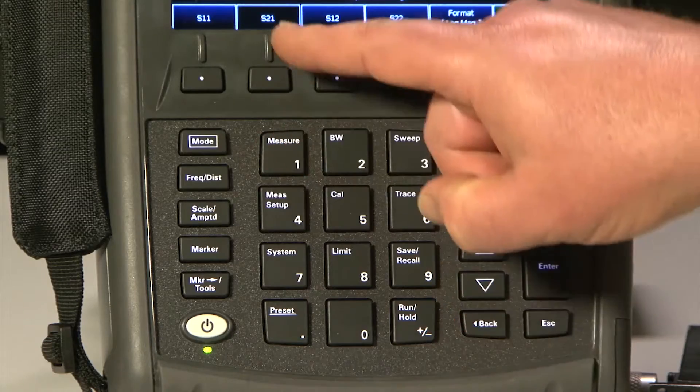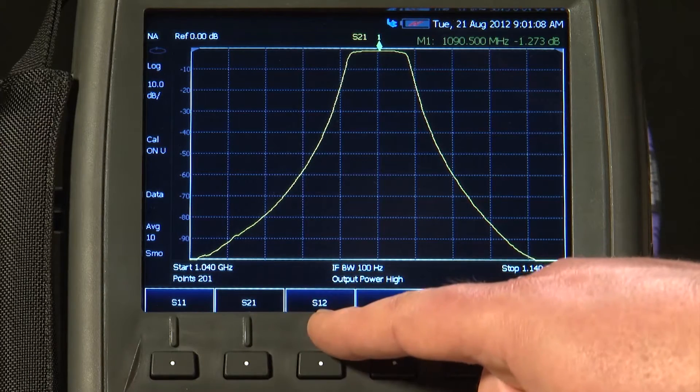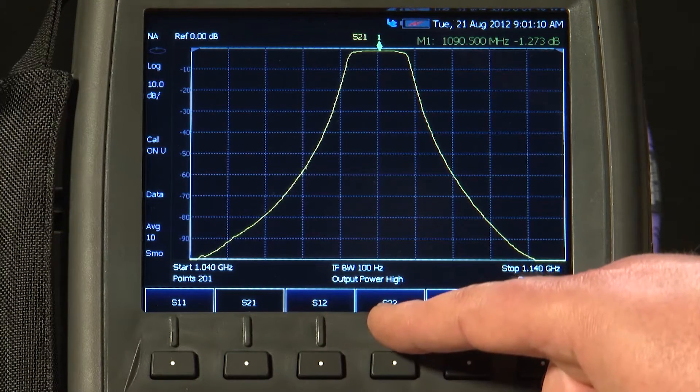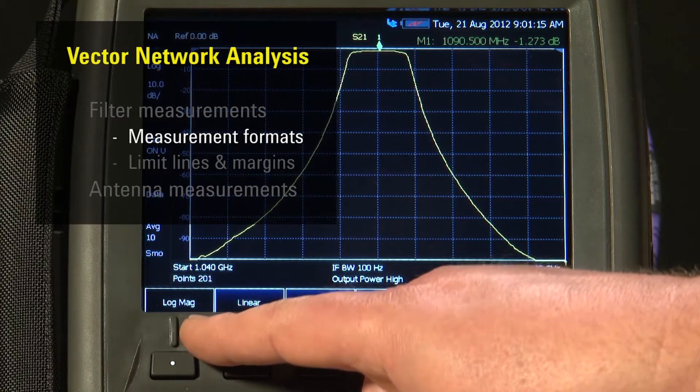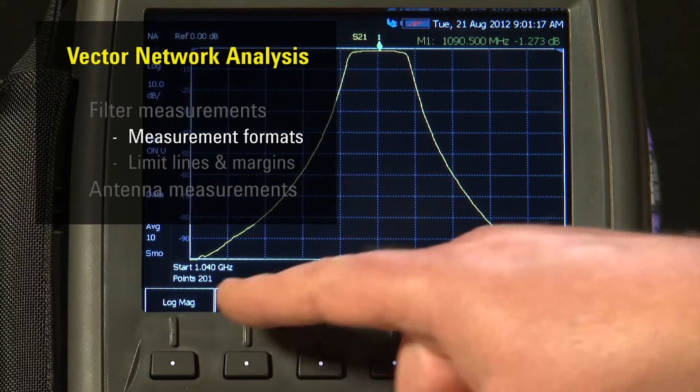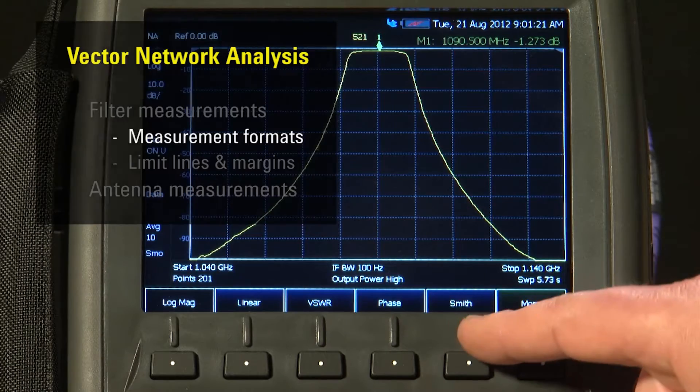Now, of course, pressing the Measure key, we are measuring S21 insertion loss, but I could have selected S11, S12 or S22. And a range of formats you would expect to see on a Vector Network Analyzer. So, we could measure Log Mag, as we are at the moment. We could measure Linear, VSWR, Phase, a Smith Chart.